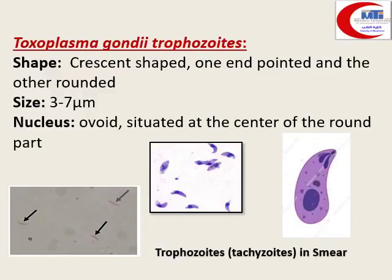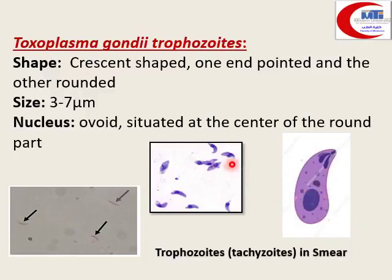The first slide is Toxoplasma gondii trophozoite. Under the microscope, it appears crescent-shaped with a nucleus in the center. There is no flagellum or any special organ of locomotion — no free flagella. This crescent shape with no flagella is how we identify the Toxoplasma gondii trophozoite.